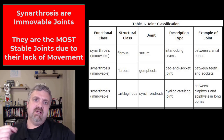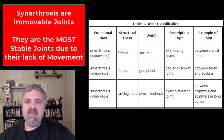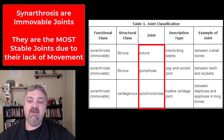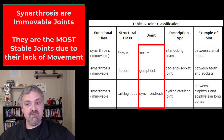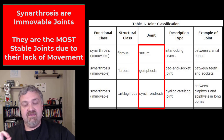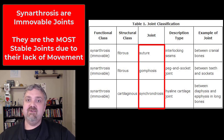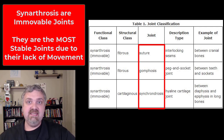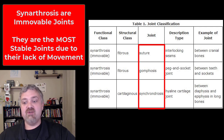So here we have synarthrosis, which again means immovable joint. The examples are going to be sutures — like the joints that hold the bones in your skull together — a gomphosis, which is the joint that holds your teeth in their sockets, and a synchondrosis. The best example of a synchondrosis is your growth plates: there's technically still a joint between the shaft of a long bone (the diaphysis) and the ends (the epiphyses), until they fuse into adulthood. Just know that a synarthrosis is an immovable joint; I'll go into detail when we cover them structurally.